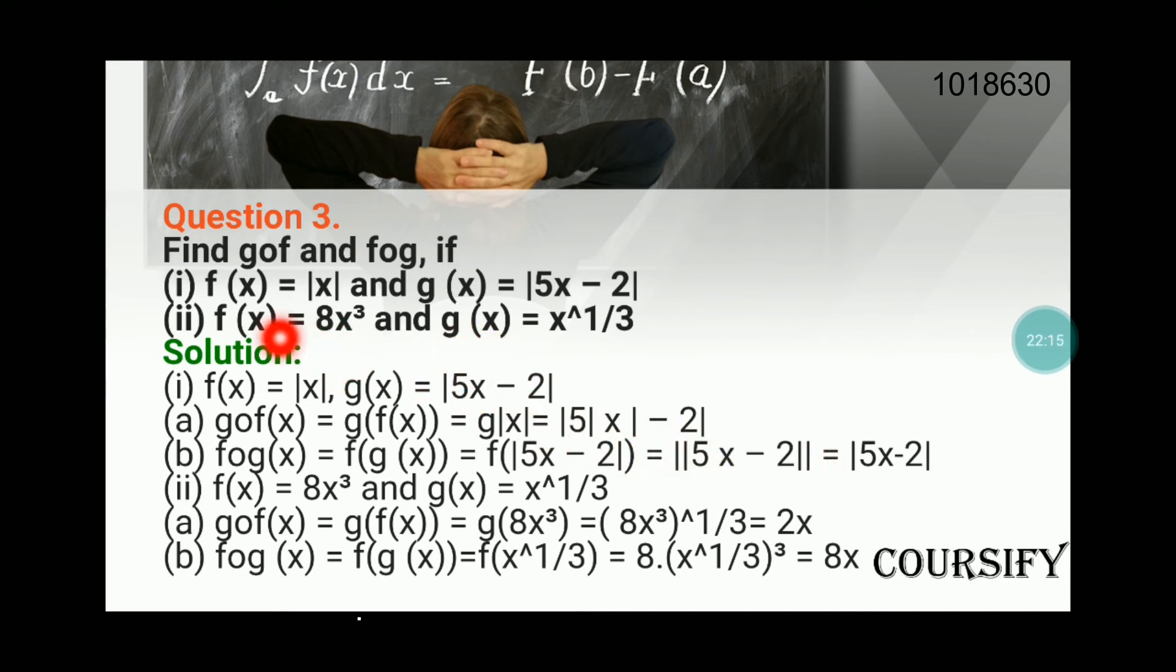Now we find f of g. First, g(x) = x^(1/3), and then we feed it to f(x). What does this function do? It first calculates the cube of whatever value is fed to it, and then multiplies it with 8. The cube of x^(1/3) is x, and then multiplied with 8 gives us 8x.